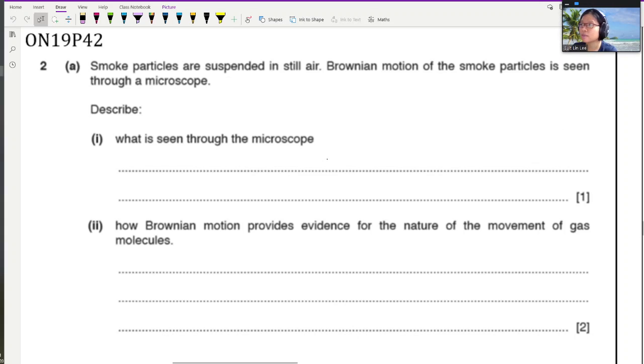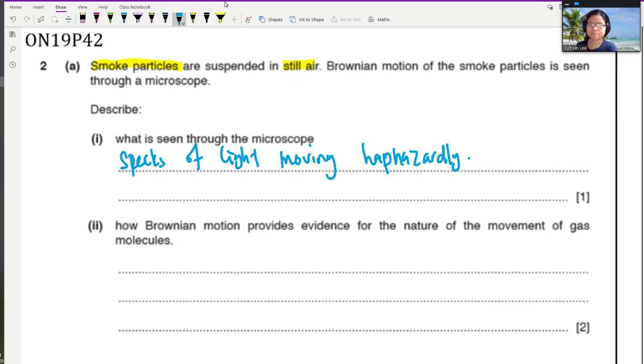A smoke particle - smoke particles are suspended in still air. And we have Brownian motion of the smoke particles is seen through a microscope. Describe what is seen in the microscope. So, in order to do that, we are going to recall the keywords. For example, we will have this haphazard movement. So, you can see that specks of light moves or moving haphazardly because they zip around in random motion.